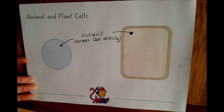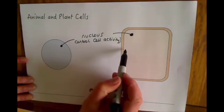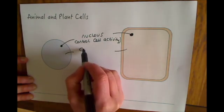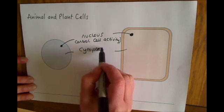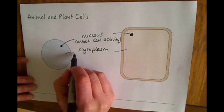The next thing they've got in common is the jelly-like substance in the cell, which is cytoplasm. And in the cytoplasm this is where chemical reactions occur.